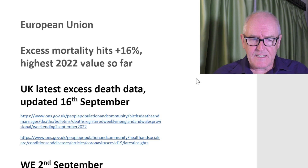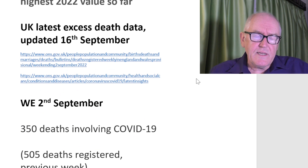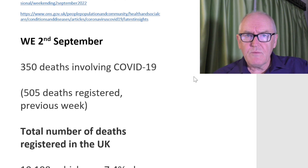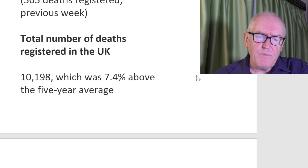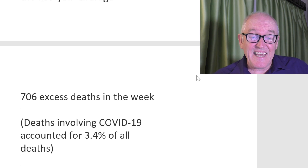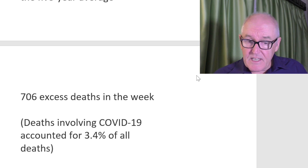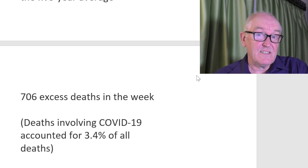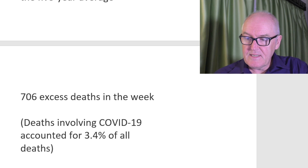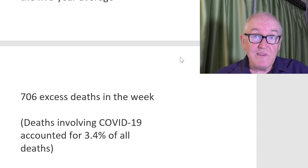The UK's latest excess death data was updated on the 16th of September, with data for the week ending the 2nd of September. 350 deaths involved COVID — that was 505 the week before, so that's continuing to go down, which is good news. The total number of deaths registered in the UK was just over 10,000, but 7.4% above the five-year average. This equates to 706 excess deaths, with COVID-19 accounting for only 3.4% of all excess deaths. So there's a large number of excess deaths that cannot be attributed to COVID. What is causing these deaths? We're not really seeing much discussion of this, which is why I'm very keen to keep this topic in people's minds.